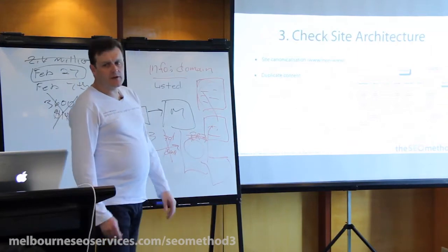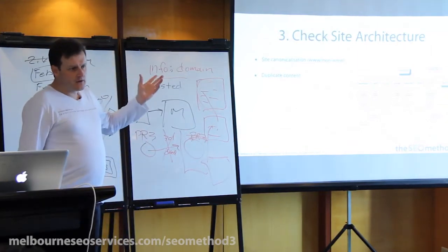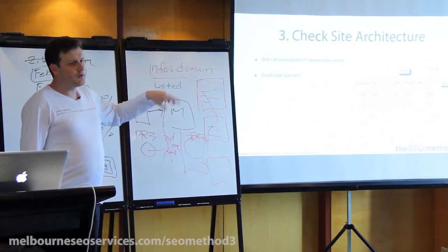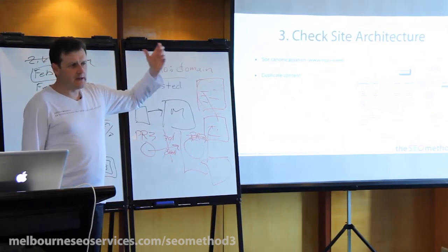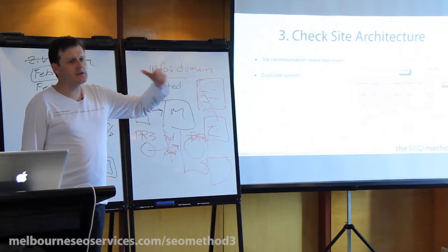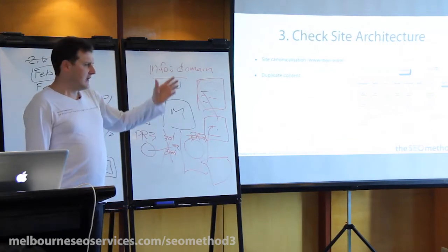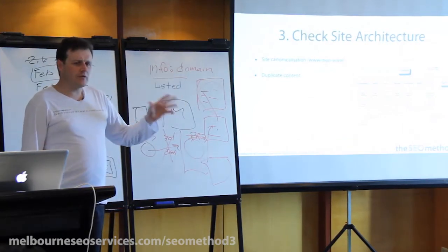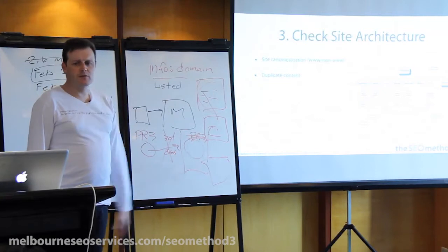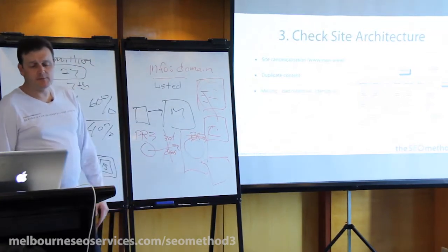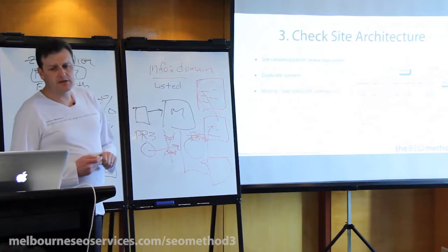Duplicate content is another big one. Webmaster Tools will call this out for you — they'll say you've got duplicate title tags, duplicate meta descriptions. You can also take a snippet of text off the page and check whether it's duplicate. You could check Copyscape even for duplication across other sites.